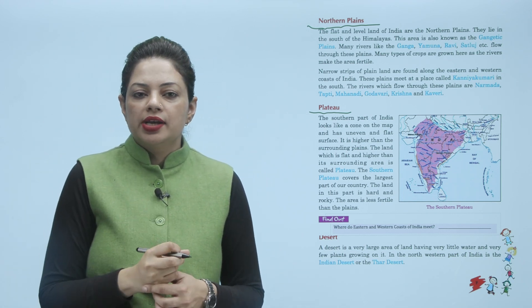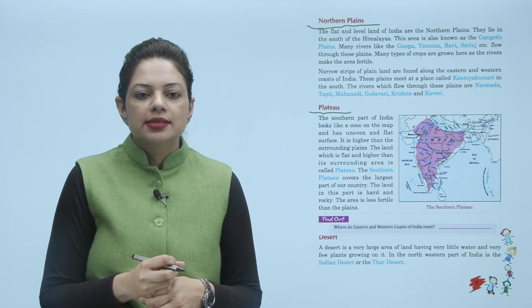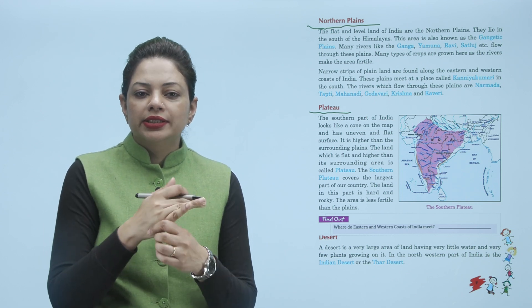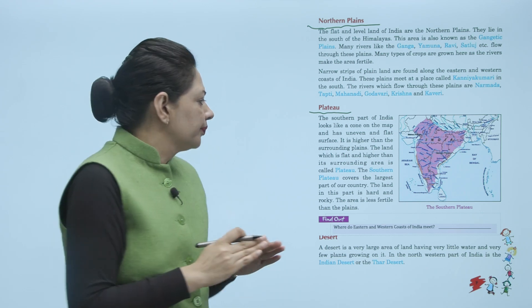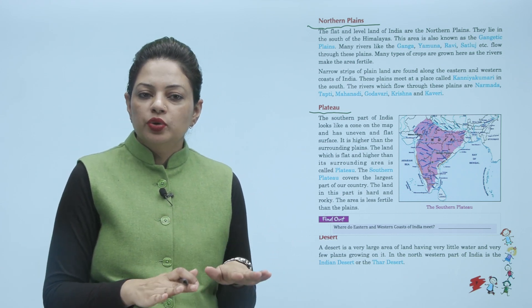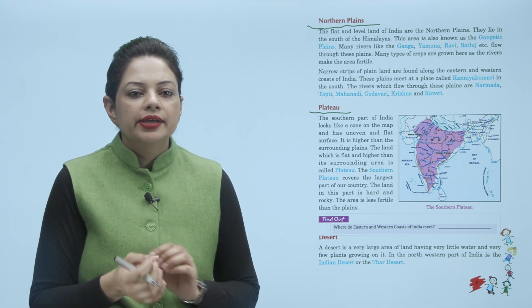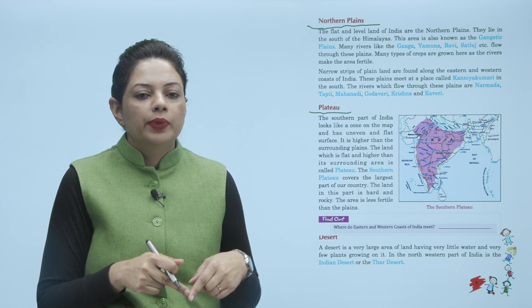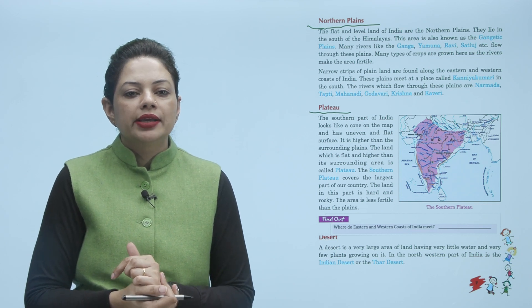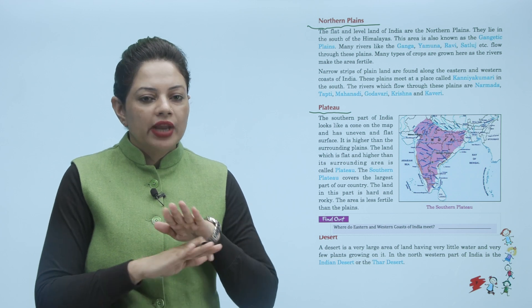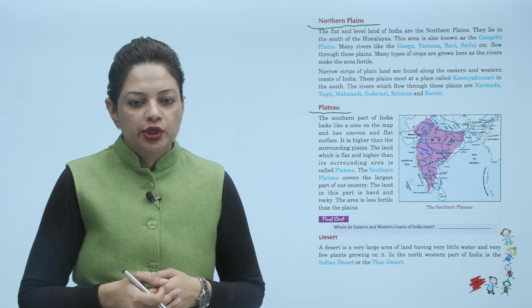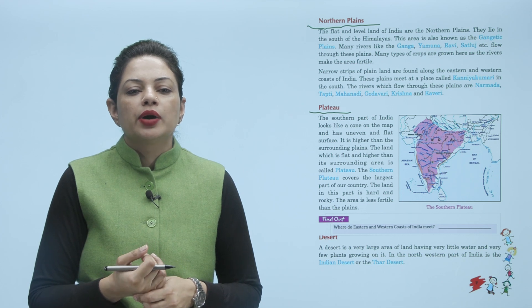A plateau is the southern part of India that looks like a cone on the map and has an uneven and flat surface. It is higher than the surrounding land but is neither a plain nor a mountain. The land which is flat and higher than its surrounding area is called a plateau. The southern plateau covers the largest part of the country.